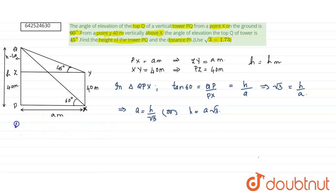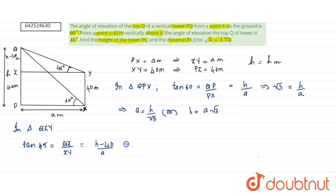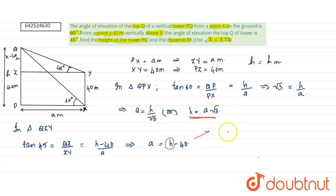In triangle QZY, we have tan 45 equals QZ divided by ZY. QZ is h minus 40, and ZY is a meters. Tan 45 is 1, so cross multiplying gives a equals h minus 40. Now substituting h equals a root 3 into this equation, we get a equals a root 3 minus 40. Taking all the a terms to one side: 40 equals a root 3 minus a, which gives 40 equals a times (root 3 minus 1).